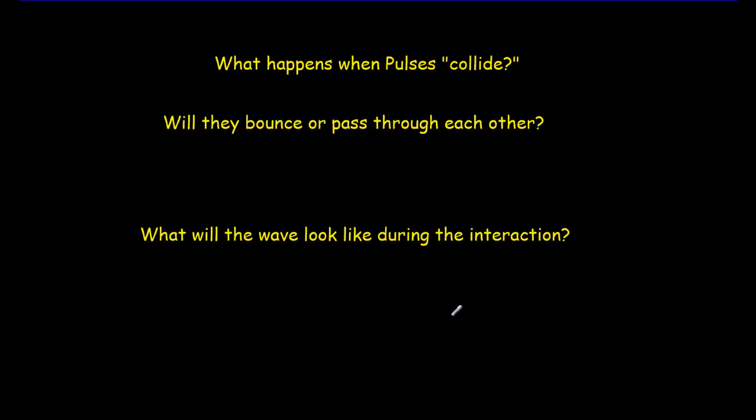Now what happens when two pulses collide? If I've got a pulse coming this way and it collides with another pulse, let's make it a little bigger like that. What's going to happen? Are they going to bounce off each other, in which case the red one would end up going back and the white one would also reflect back? Or do they pass through each other, in which case the smaller white one would end up on the right and the larger red one would end up on the left?